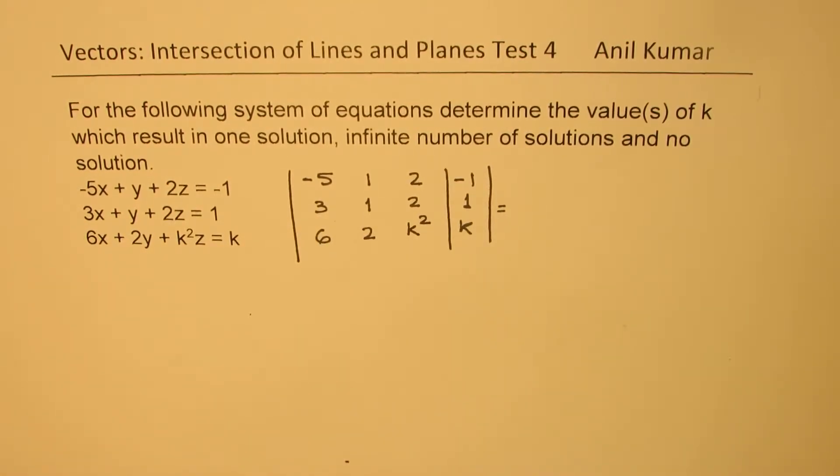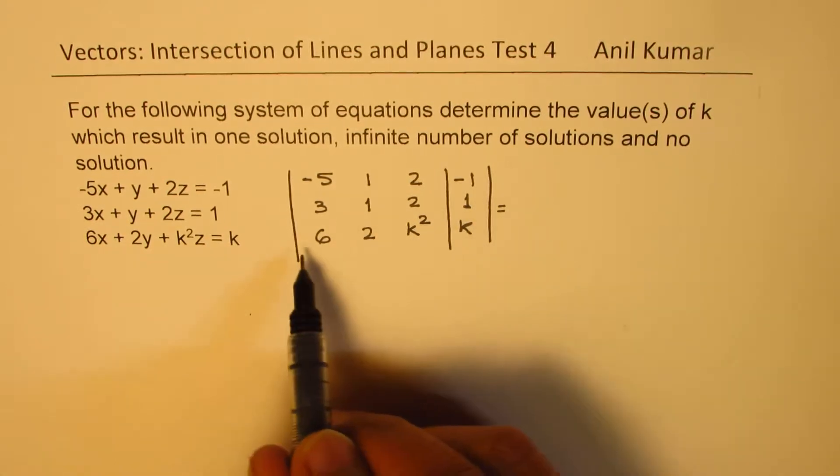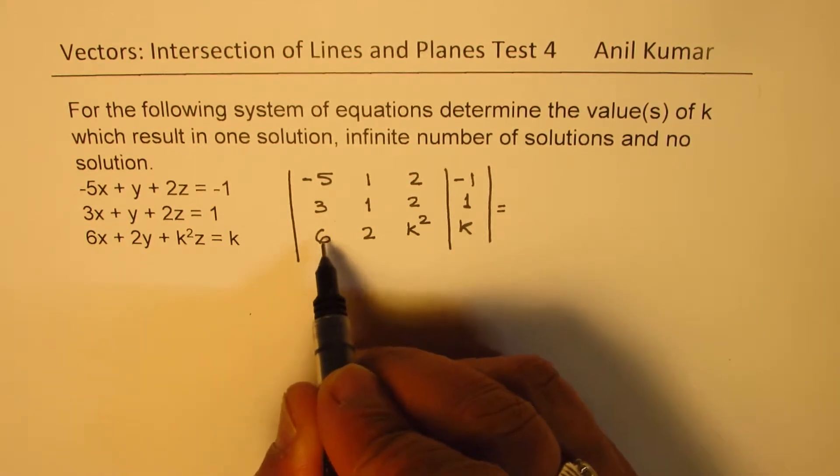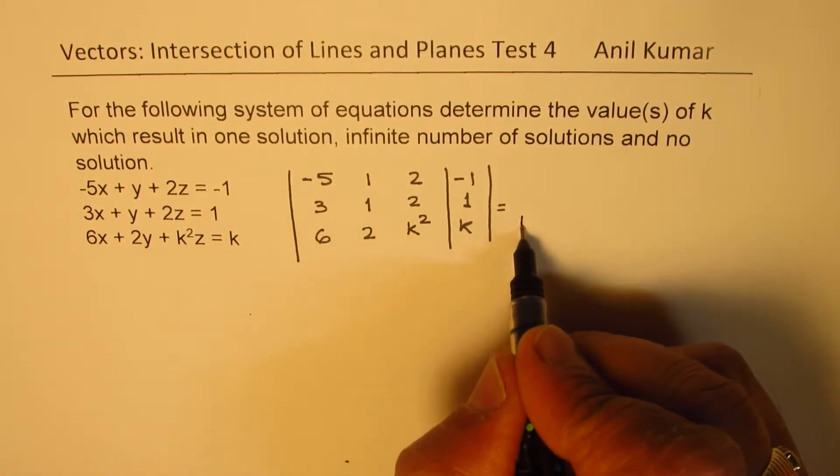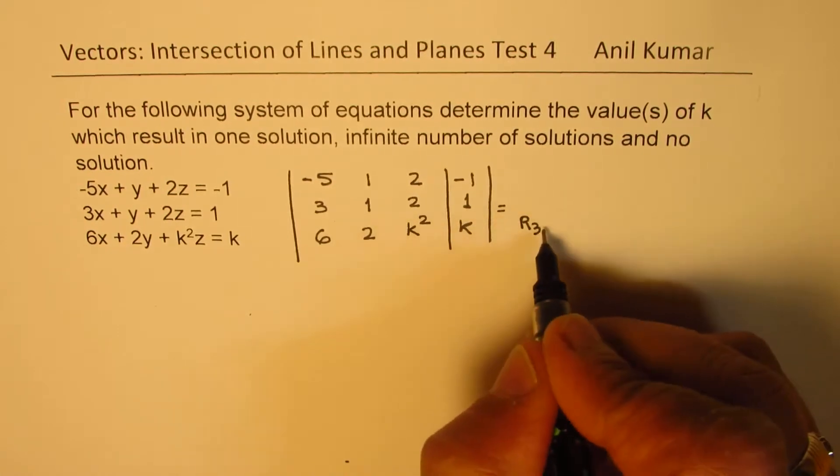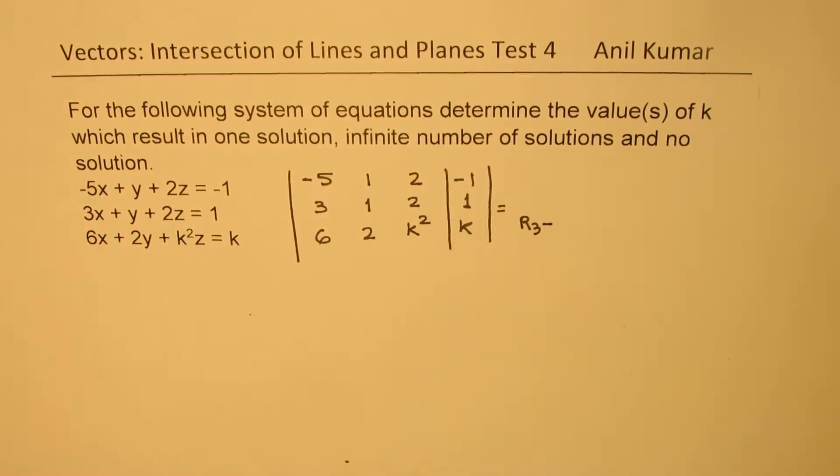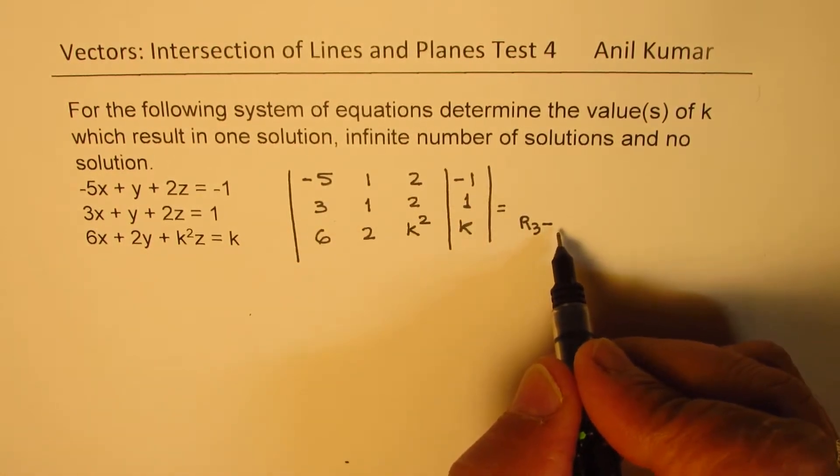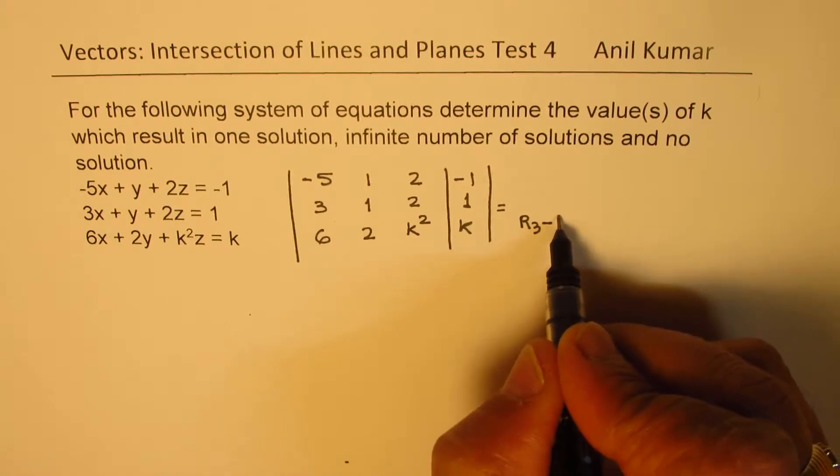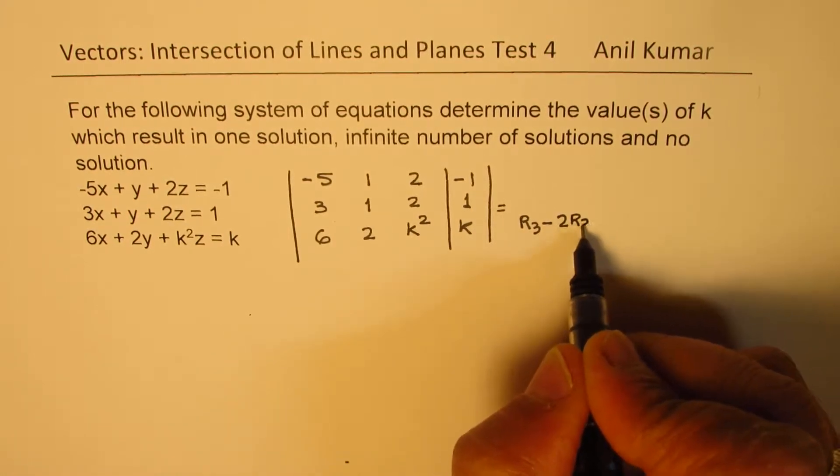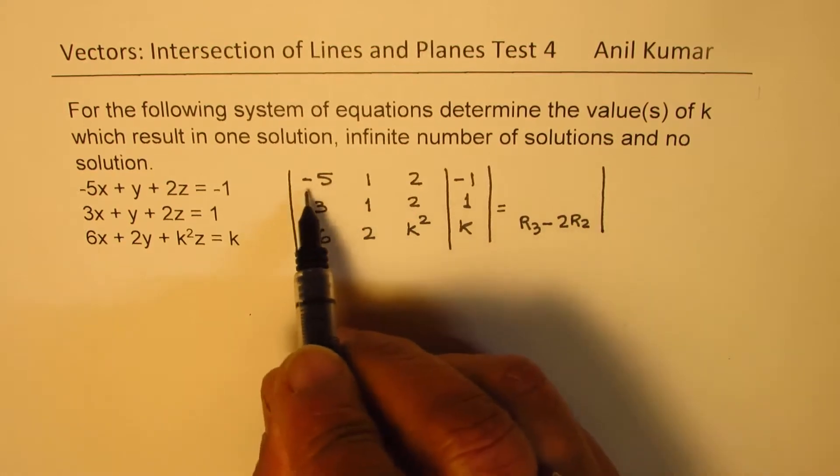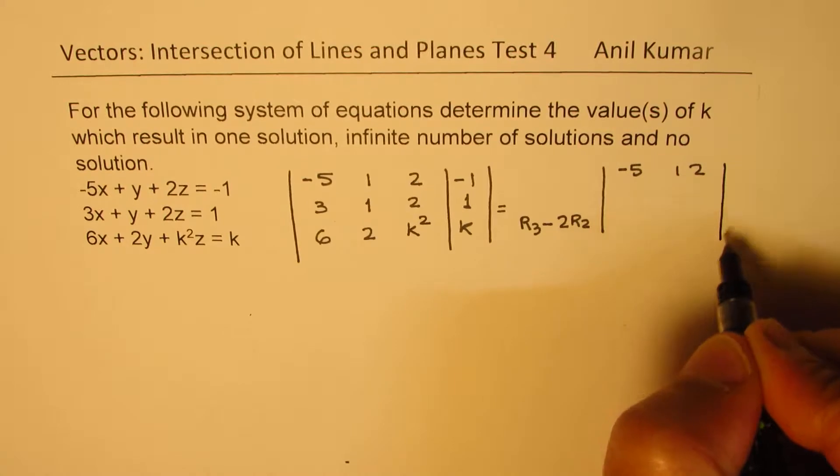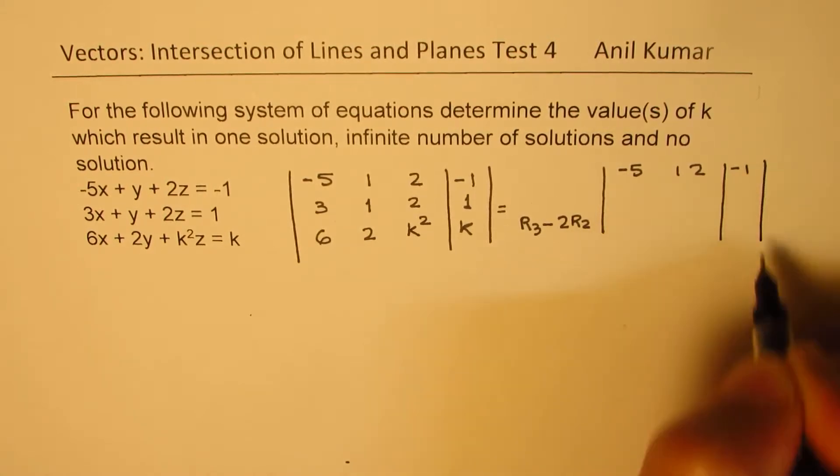First step, let's try to make these two numbers as 0. So what we could do here is, in this equation, we can do r3 minus 2 times r2. So we'll keep the first one same, which is minus 5, 1, 2, minus 1.